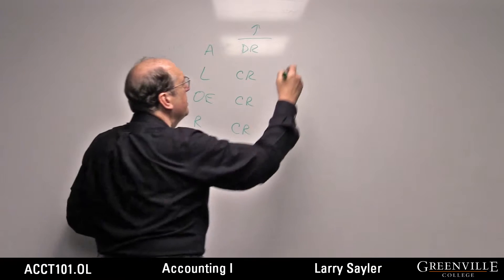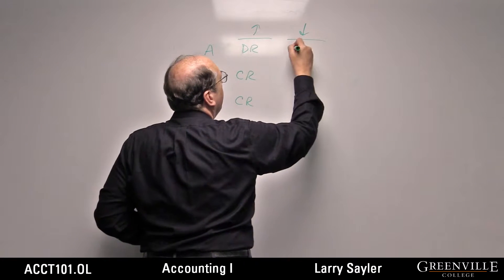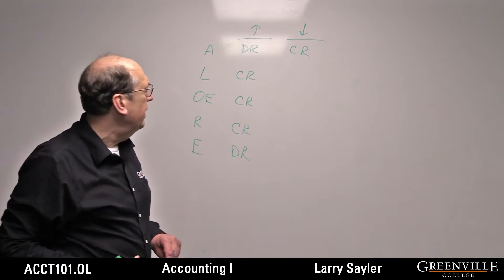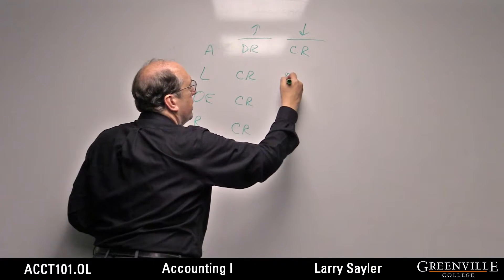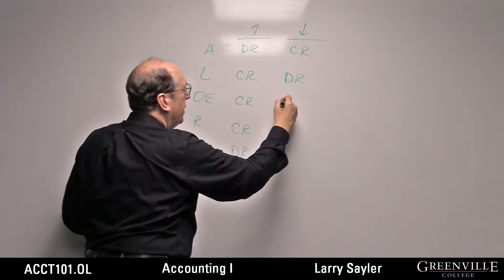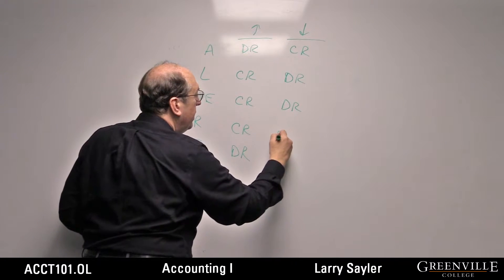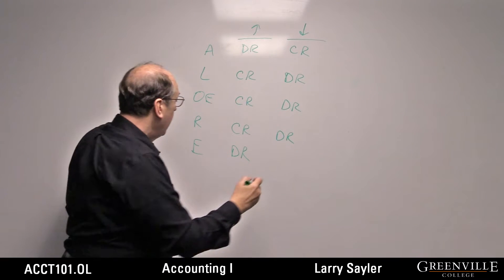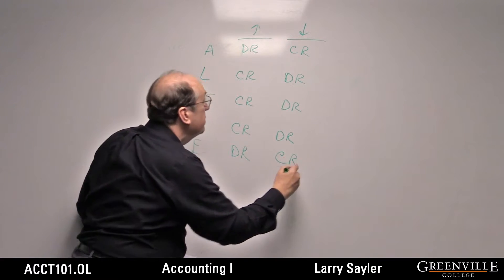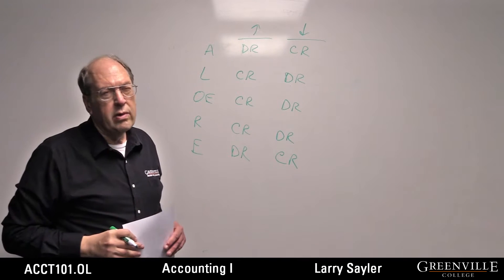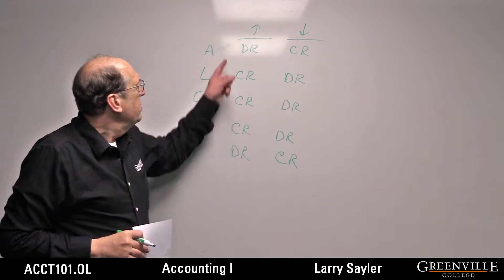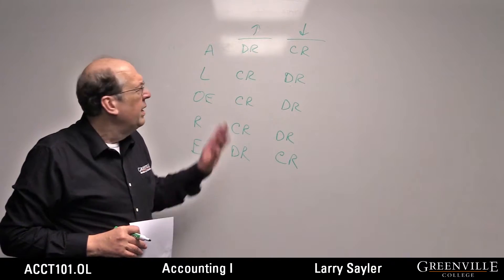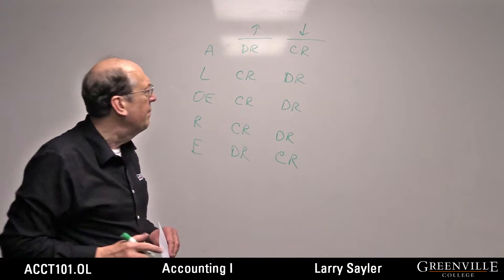And now just the opposite. If you want to decrease an asset, instead of debiting it, you credit it. If you want to decrease a liability, you debit it. Decrease owner's equity is a debit. Decrease revenue is a debit. And if you want to decrease expense, that's a credit. Once you know the first column, the second column is just the opposite.